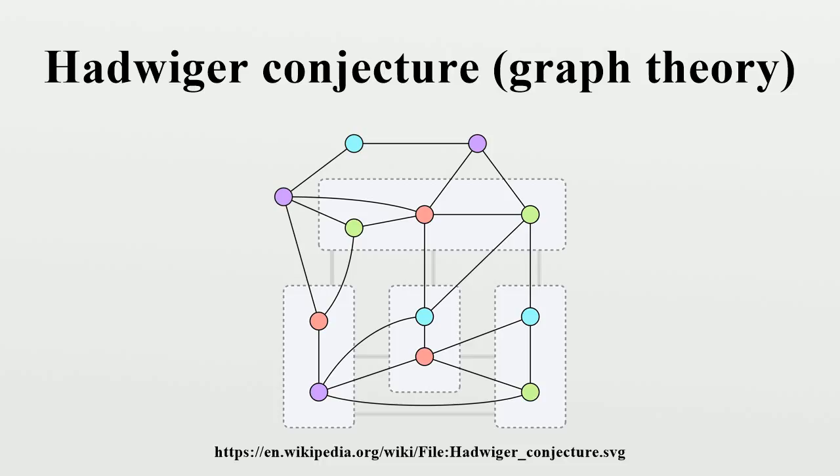Hadwiger's conjecture states that there exists a different way of properly edge contracting sets of vertices to single vertices, producing a complete graph K_K in such a way that all the contracted sets are connected. If F_K denotes the family of graphs having the property that all minors of graphs in F_K can be colored,